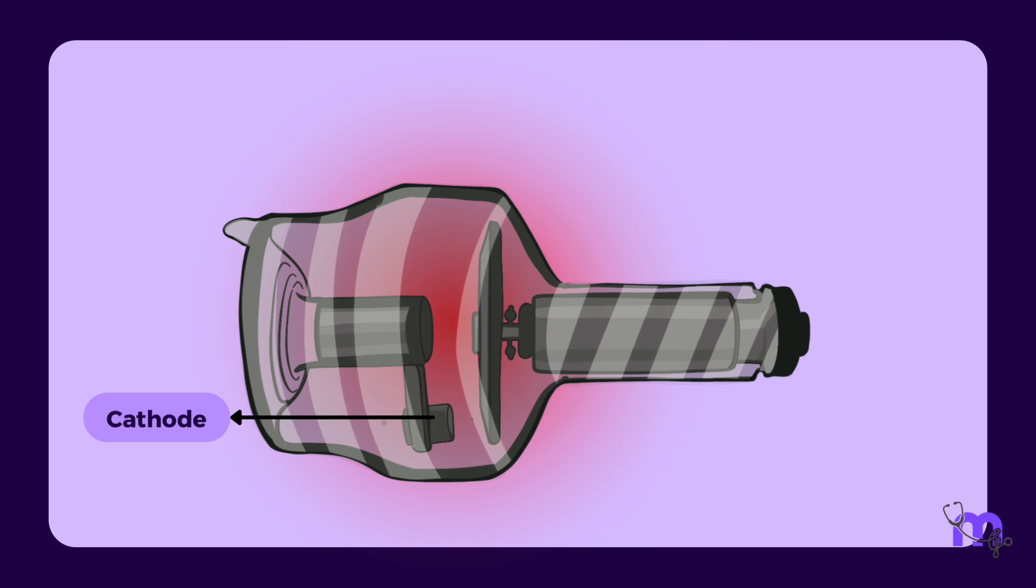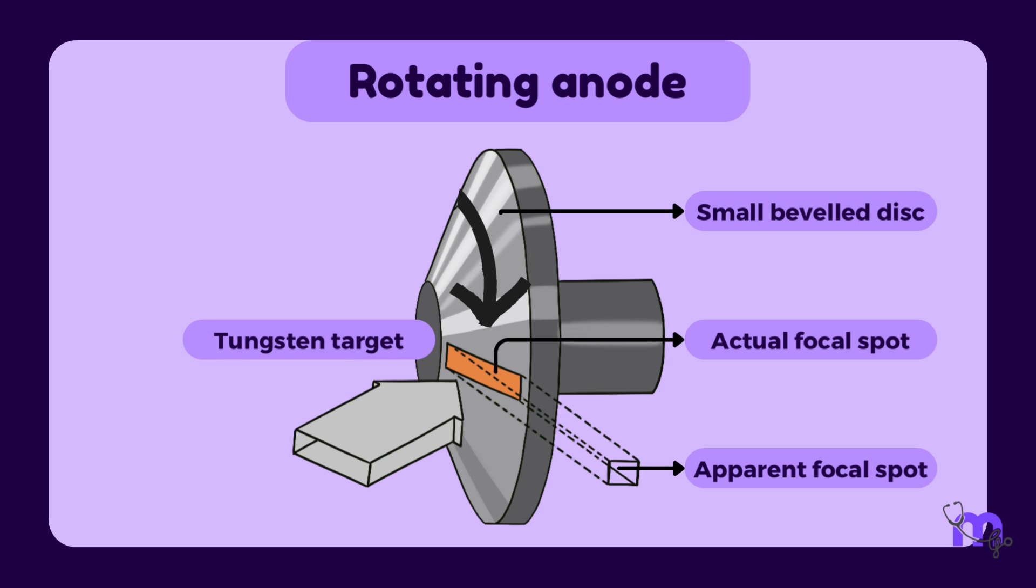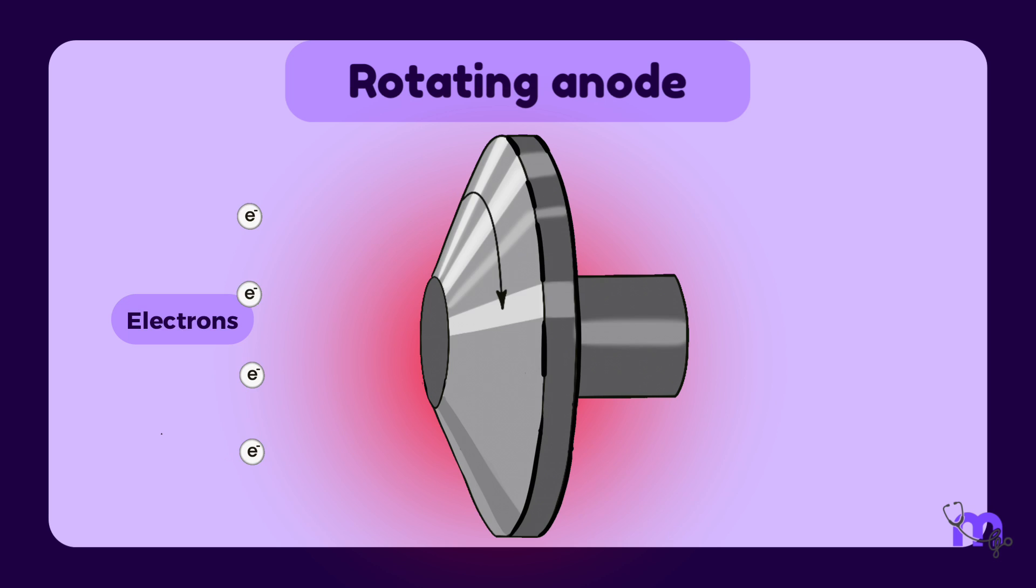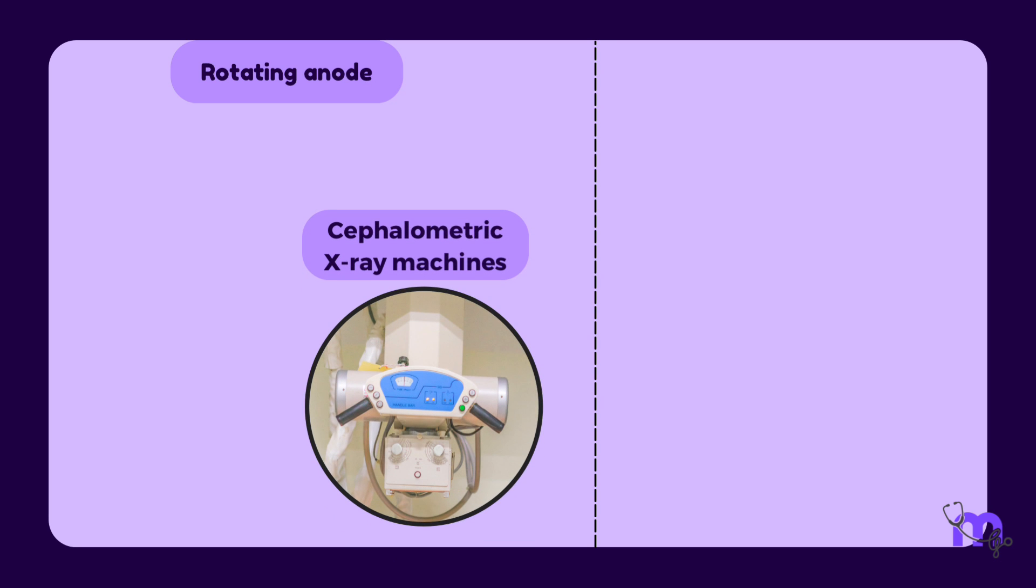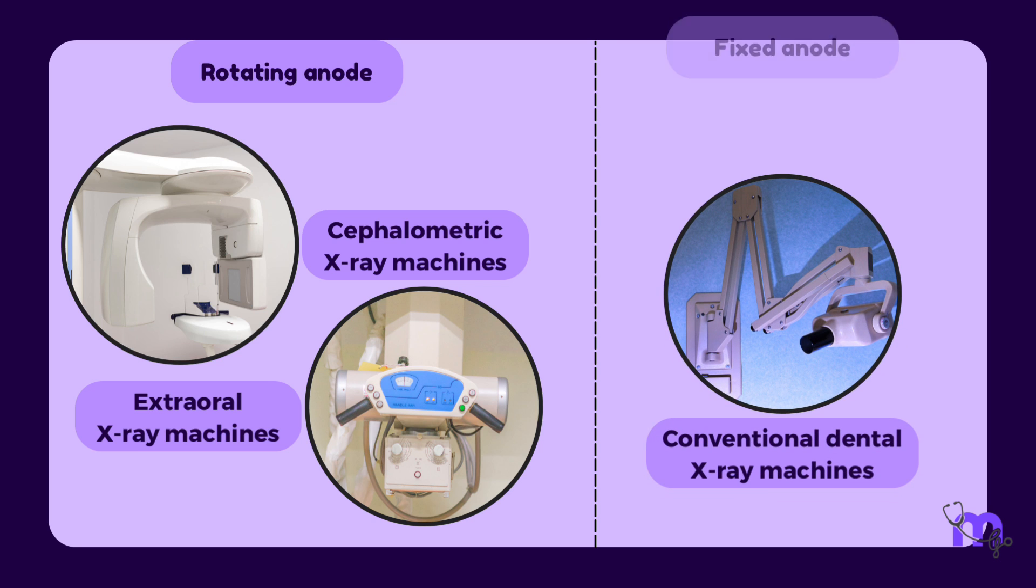Another method of dissipating heat from a small focal spot is to use a rotating anode. In the rotating anode, the tungsten target is in the form of a small beveled disc that rotates when the tube is in operation. As a result, electrons strike successive areas of the target and heat gets dissipated over a large area. Such rotating anodes are not used in conventional dental X-ray machines but may be used in cephalometric or extraoral X-ray machines. Conventional dental X-ray machines use fixed anodes that stay stationary while in function.